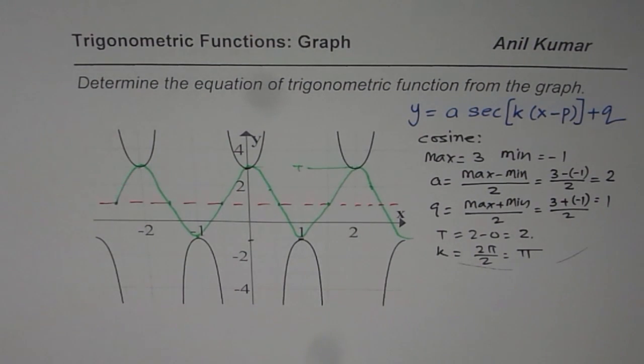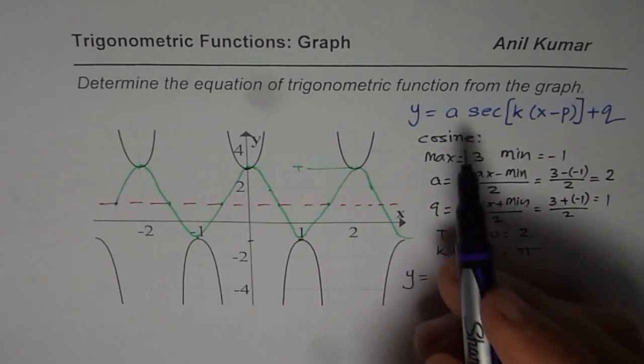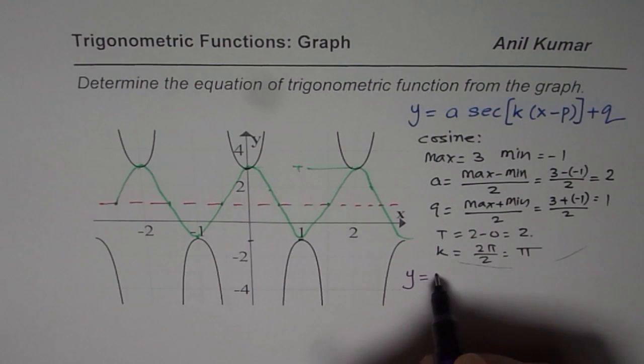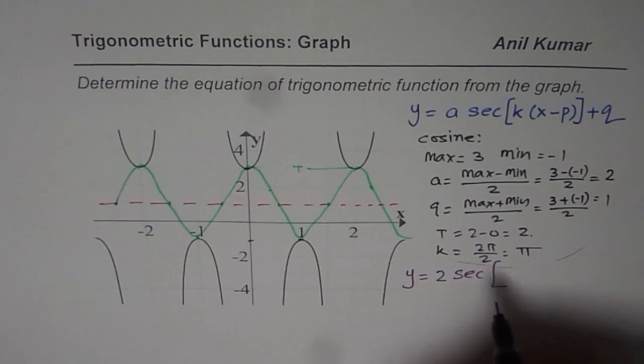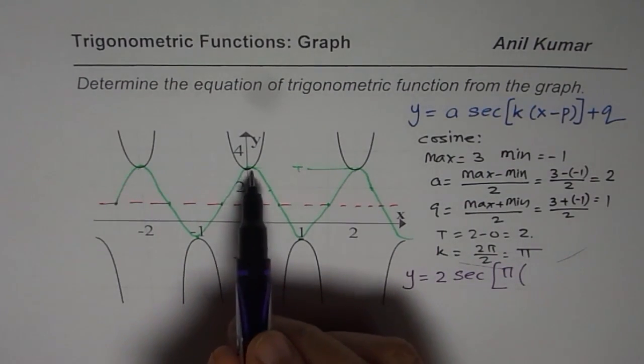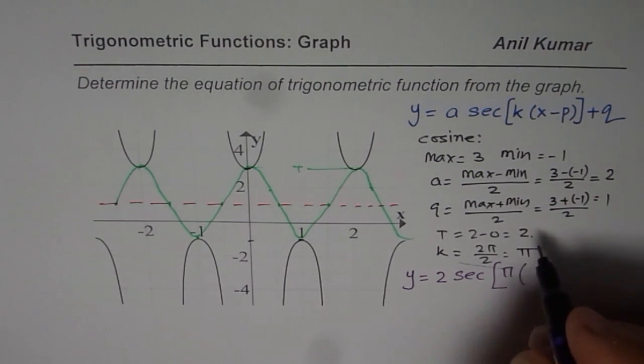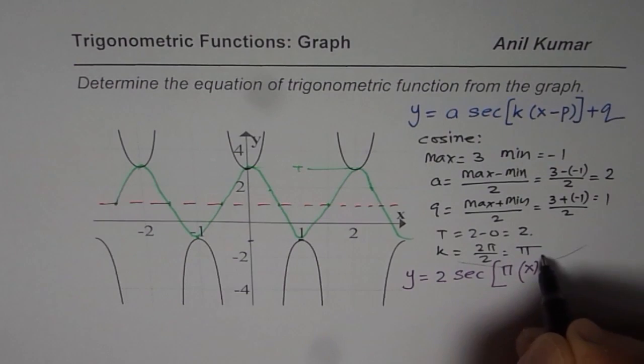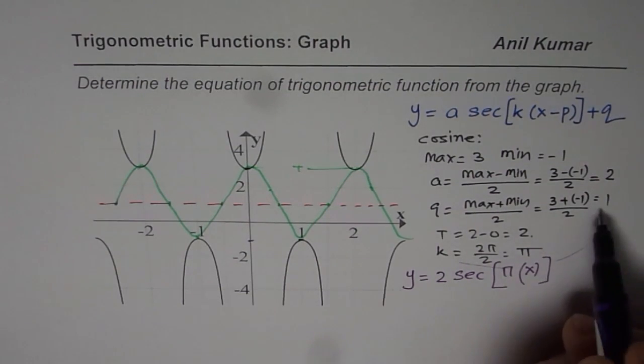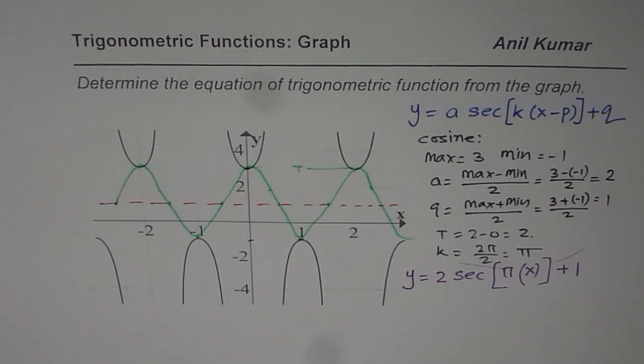Now we can write down the equation as y equals to a, the amplitude is 2. Secant, the k value is π. Now since there is no phase shift for cosine there is no phase shift for secant also. So we get π times x and the q value moves one unit up so we get 1. So that becomes the equation when we are considering a secant function.